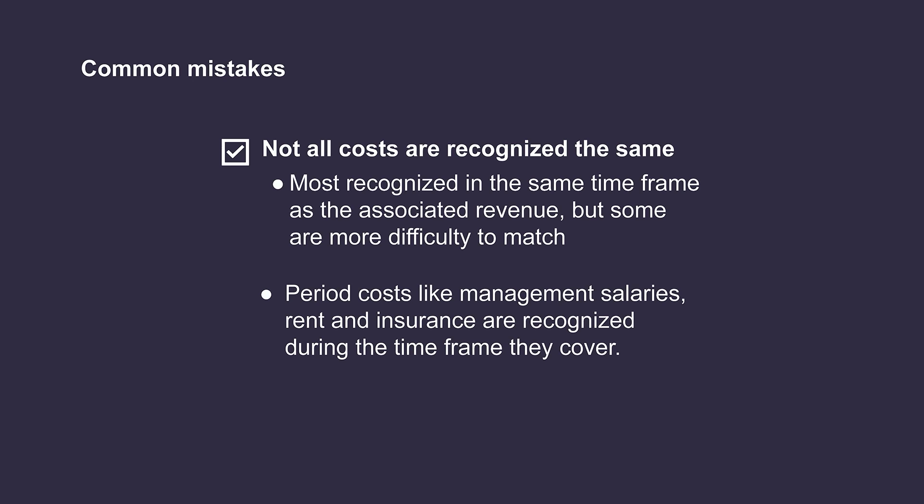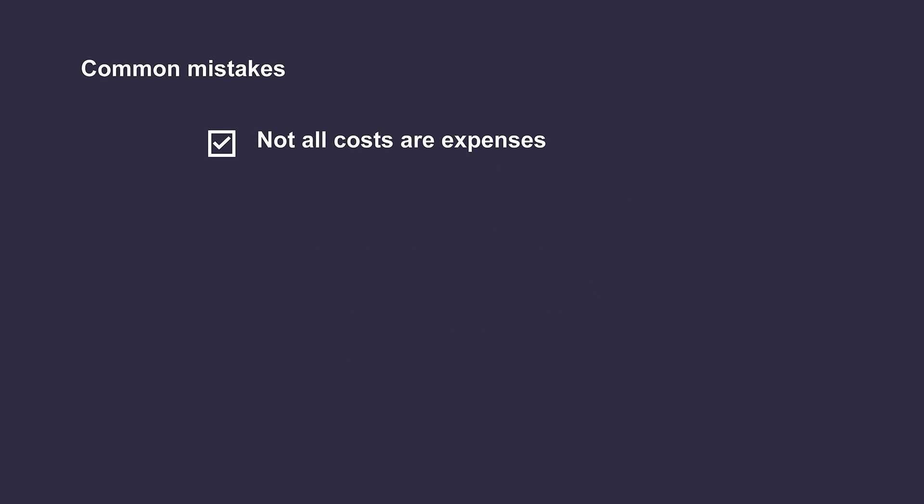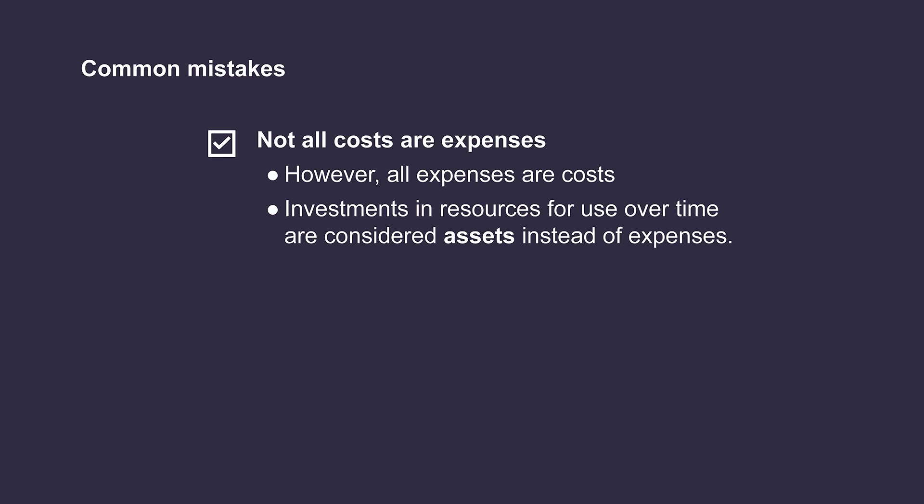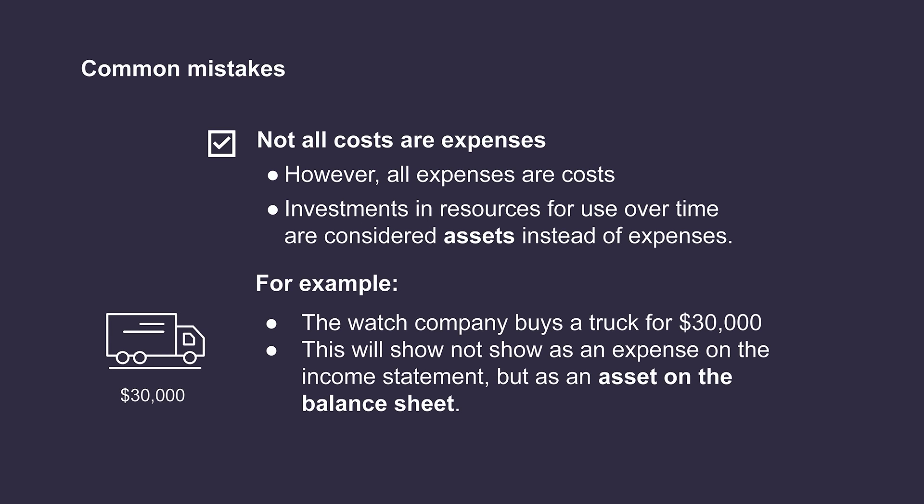While all expenses are costs to an organization, technically not all costs are considered expenses. Operational costs that a company incurs as part of doing business are considered expenses. However, when a business makes an investment in resources they plan to use over the long term, this is considered an asset at the time of purchase instead of an expense. For example, if the watch company purchases a delivery truck for $30,000, this would not be recorded as an expense on the income statement but instead would show up on their balance sheet as an asset.